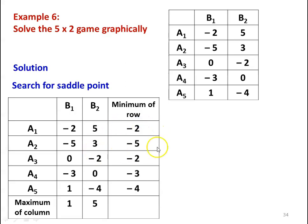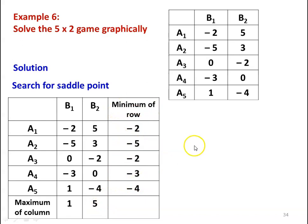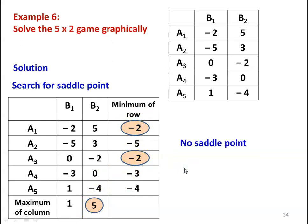First, we search for the saddle point. The minimum of each row: −2, −5, −2 (wait: row minima are −2, −5, −2, −3, −4). The maximum of each column: column B1 max is 1, column B2 max is 5. The maximin (maximum of row minima) is −2, and the minimax (minimum of column maxima) is 1. Since minimax ≠ maximin, there is no saddle point in the problem.